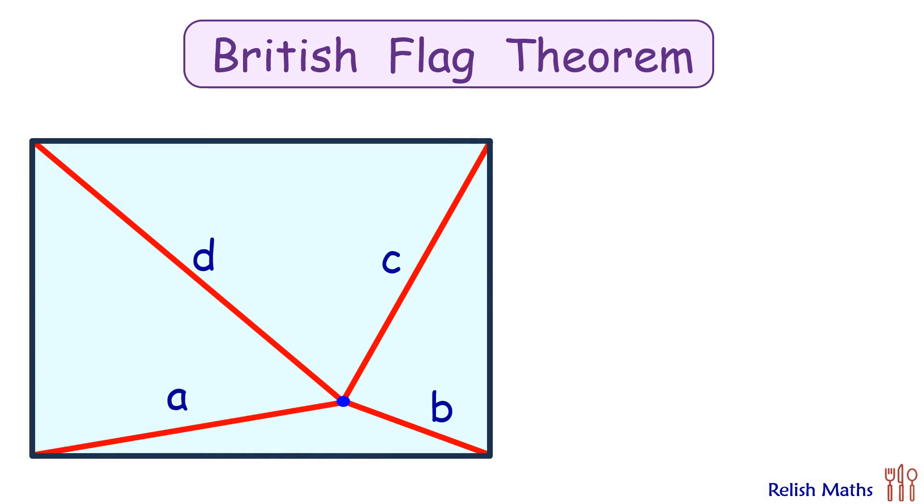To find the answer, we will be using British Flag Theorem, which we have discussed in video number 72. It states that if the distance of any point in a rectangle is given from the vertex, then the relation between these distances is given by b² + d² = a² + c².